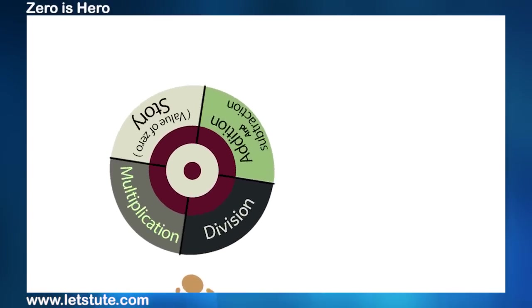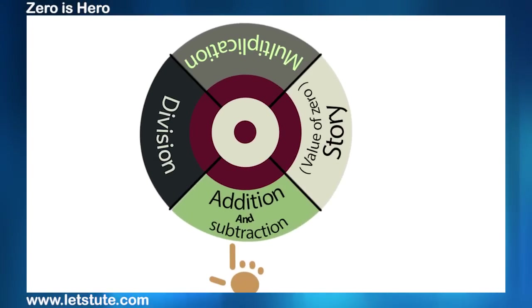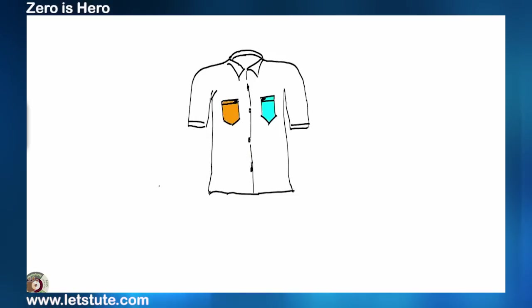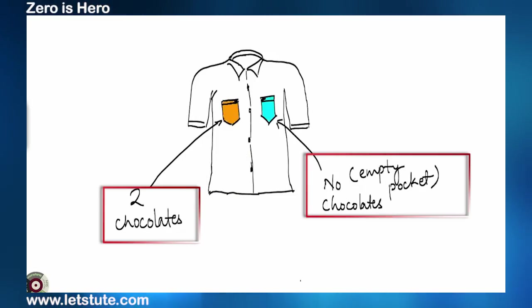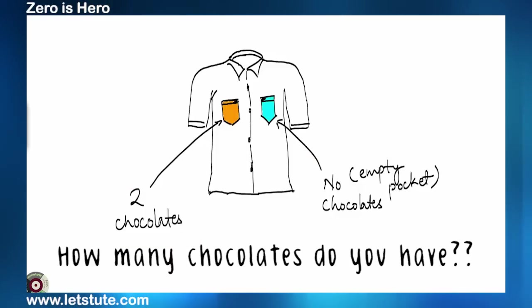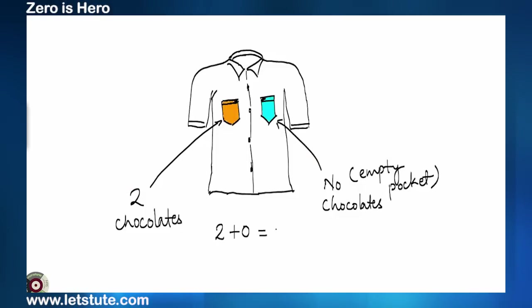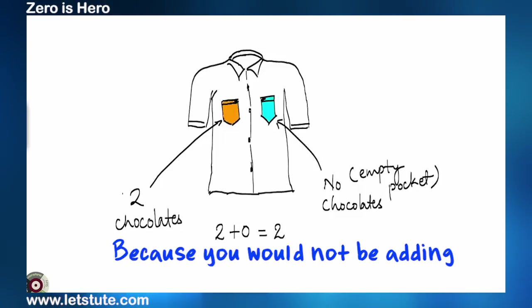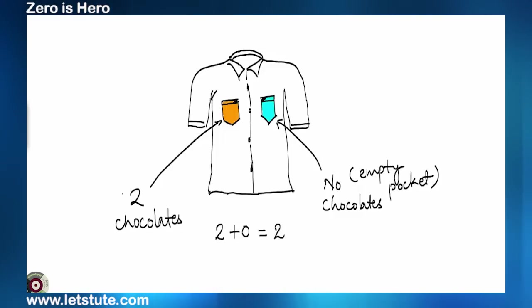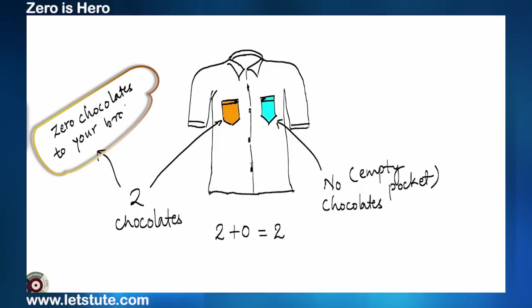Suppose you have two chocolates in left pocket and zero chocolate in the right pocket. So, exactly how many chocolates do you have? The answer is two only. Because you would not be adding anything at all. On the same lines, if you give zero chocolate to your brother out of your two chocolates, then you would be still left with two, right?